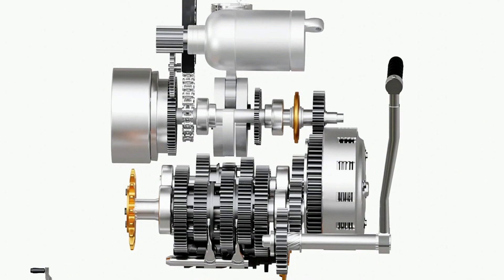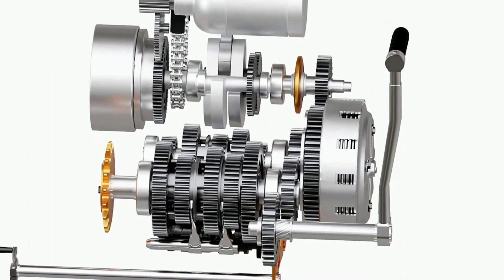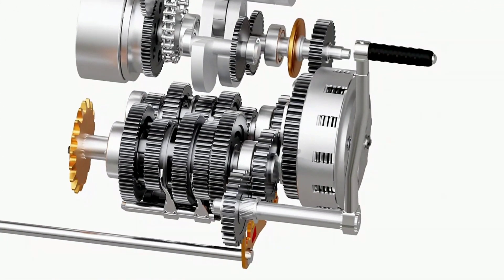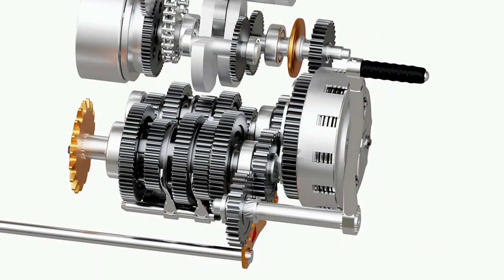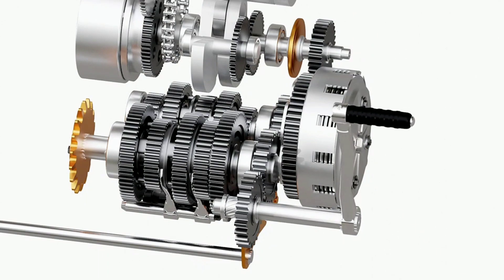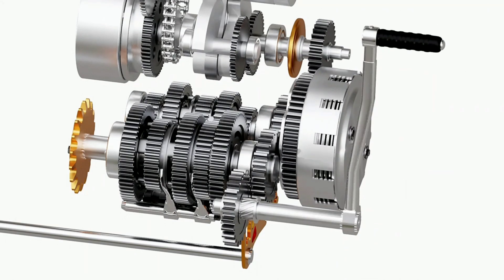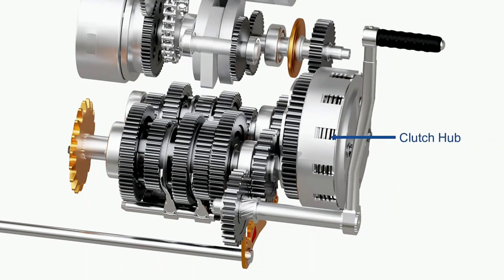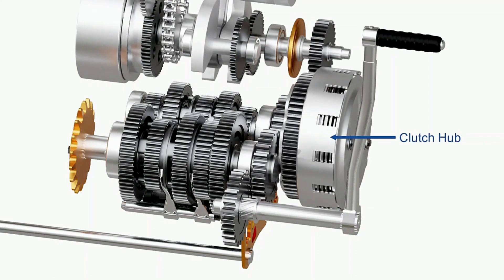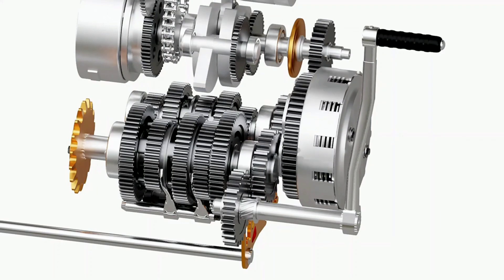All motorcycles have either a kickstarter or a self-starter, or both. A kickstarter mechanism is simple yet interesting. As the kickstarter lever is descended, a helical spline forces the gear to slide and engage with a freewheeling gear on the main shaft. As the lever is descended further, the gear spins on its axis and transfers the power to the clutch hub, which transfers the power to the crankshaft and eventually to the engine.